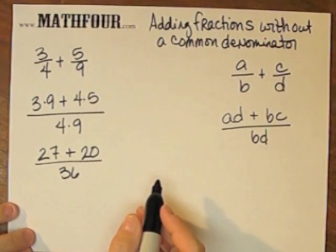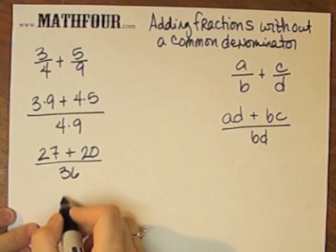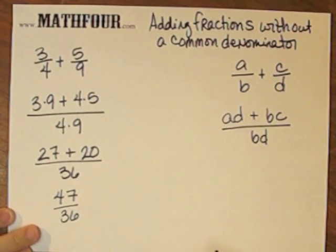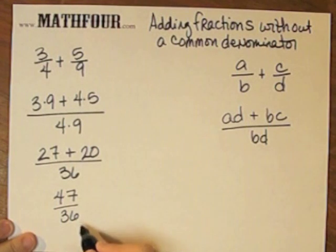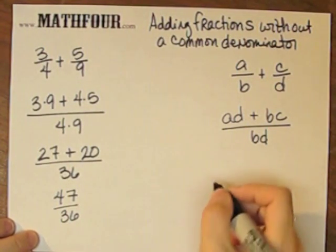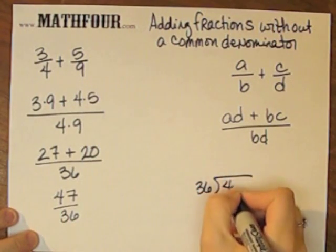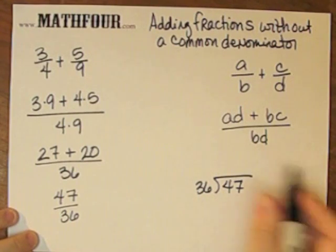Adding the numerator pieces, I have 47 over 36. And depending on your bent and how you feel about fractions being just fractions or also having them as improper fractions, we might divide it out and do 36 into 47 to change it into a mixed number.